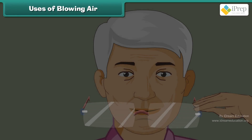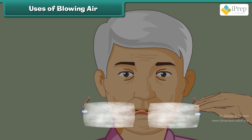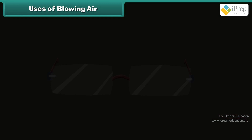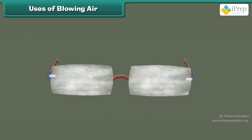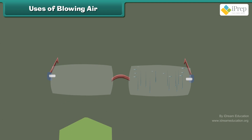You must have seen your grandfather blowing on their spectacles to wipe them clean. The air blown from the mouth is hot and the glass of the spectacles is comparatively cold. The hot air breathed out contains water vapors which turn into tiny droplets of water when in contact with the colder glass, making the glass moist and hazy so you can wipe it clean.